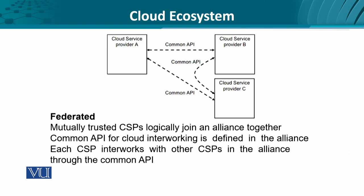If we extend the same concept for more than two service providers, we could think of it as a federation. The federation of cloud service providers is when multiple like-minded, mutually trusting service providers join an alliance, probably to provide meta-services or super-services. Each cloud service provider connects to the other through a common API, which could be a bilateral relationship or a centralized common API.